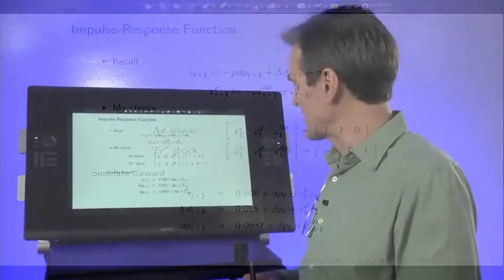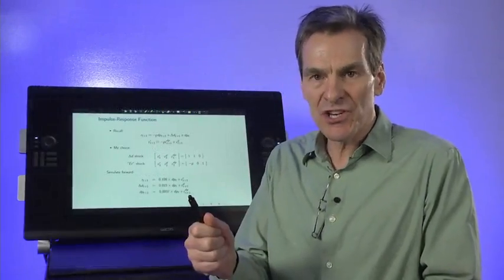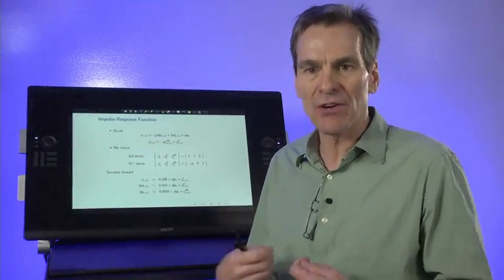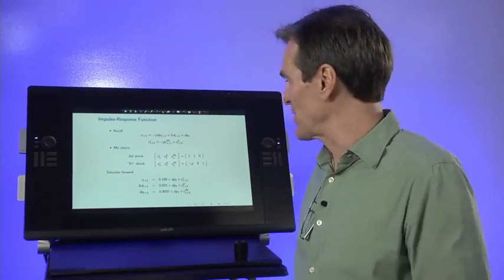The impulse response function asks the question: hit it with a unit shock, turn all the shocks off and watch the dynamics happen. So it's always a nice way to characterize what the dynamics of a vector autoregression imply.